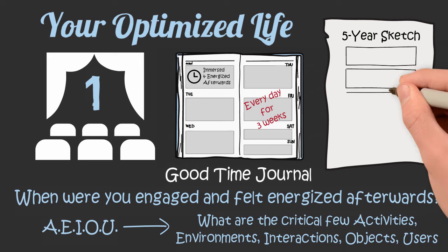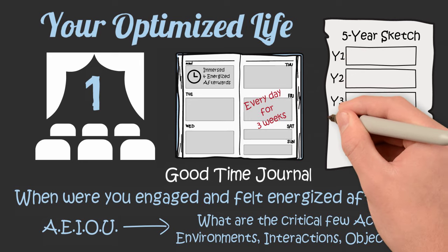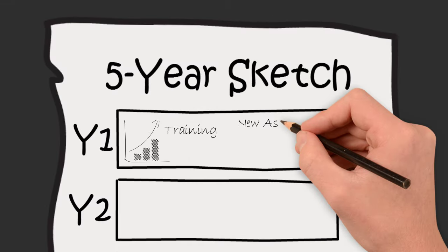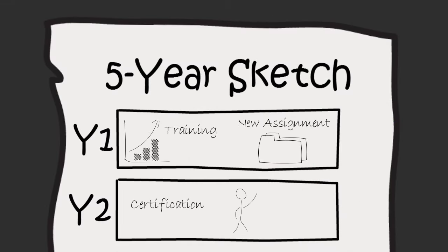Take out a piece of paper and draw out five boxes representing the next five years. Do simple sketches with stickmen and basic objects and keywords to illustrate what those five years might look like.